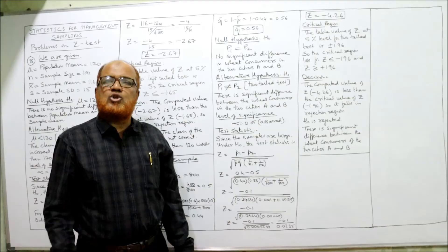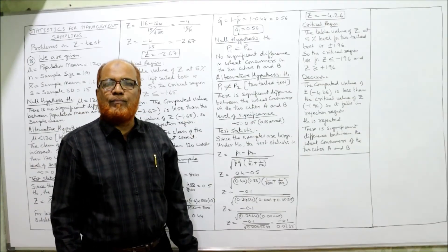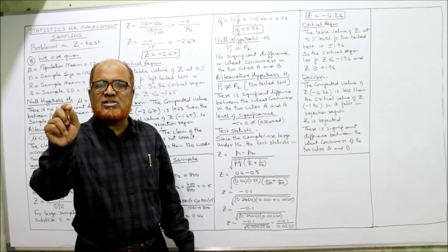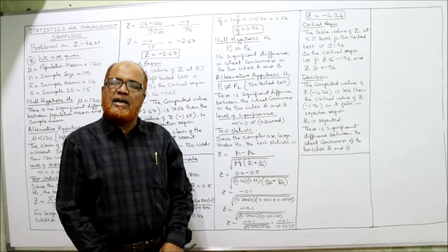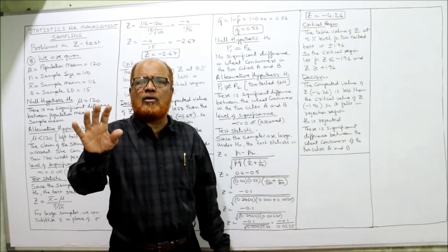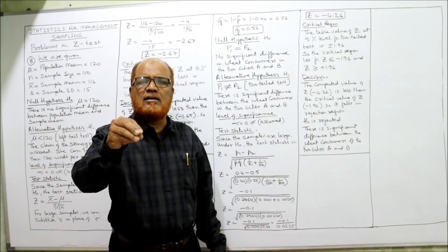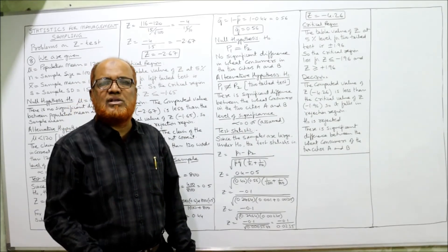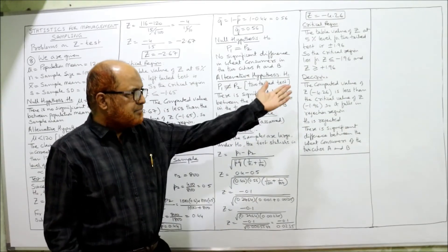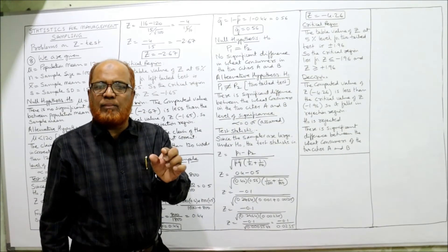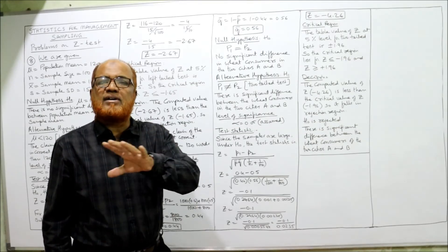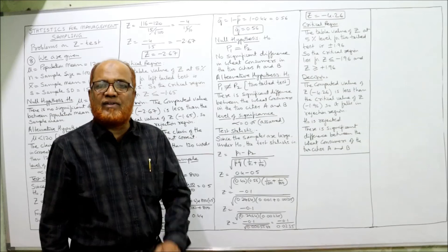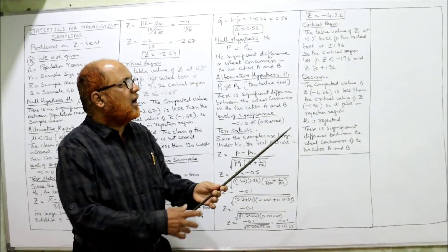This computed value of Z should be compared with the critical (table) value. The table value of Z at 5% level for a two tail test is plus or minus 1.96. In examination, simply write: at 5% level for a two tail test the critical value of Z is plus or minus 1.96. For how this value is obtained, refer to my first video on Z test problems, part 1 and part 2, where I explained this in detail.